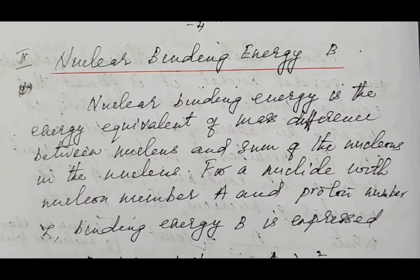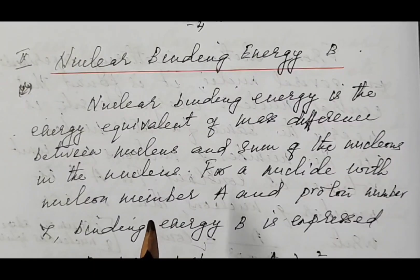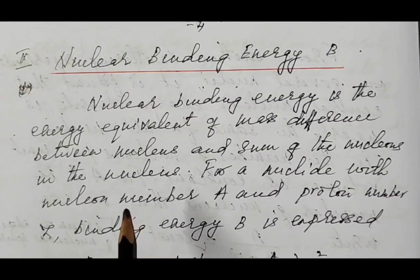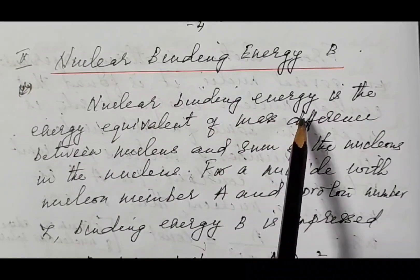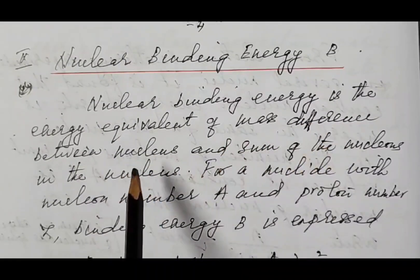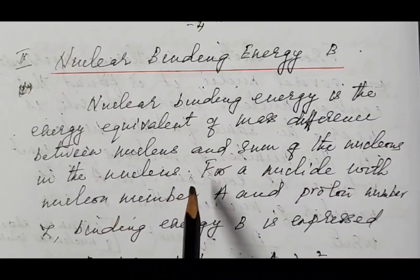Next, let us discuss the most important property of a nucleus — nuclear binding energy, denoted by the letter B. Nuclear binding energy, as the name itself indicates, is the energy required to bind all the nucleons together inside the nucleus. We define nuclear binding energy as the energy equivalent of the mass difference between the nucleus and the sum of its individual nucleons.